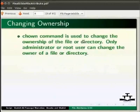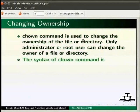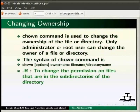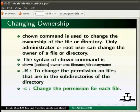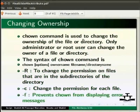The chown command is used to change the ownership of a file or directory. This is an admin command — root user only can change the owner of a file or directory. The syntax is: chown [options] owner_name file_or_directory. Options include: -R to change permissions on files in subdirectories, -c to change the permission for each file, and -f to prevent chown from displaying error messages.